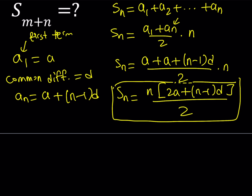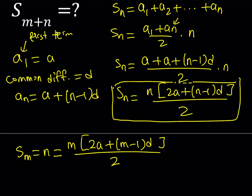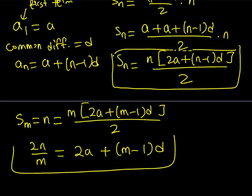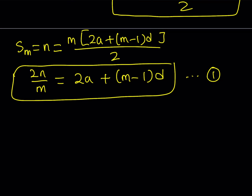Using that formula, let's write S sub M, which is given as N. Setting it equal to the formula gives us M times the quantity 2A plus M minus 1 times D, all over 2. Cross-multiplying and dividing by M gives us 2N over M equals 2A plus M minus 1 times D. Let this be equation number 1.